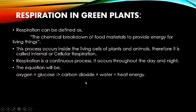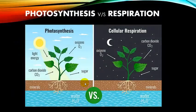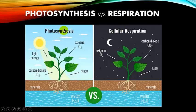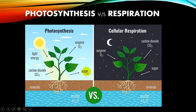Now you can see the comparison between photosynthesis and respiration. During photosynthesis, light enters the leaves through stomata, carbon dioxide comes from the air, and water and minerals come from the roots. These are combined in the presence of chlorophyll and sunlight to form oxygen and sugar.